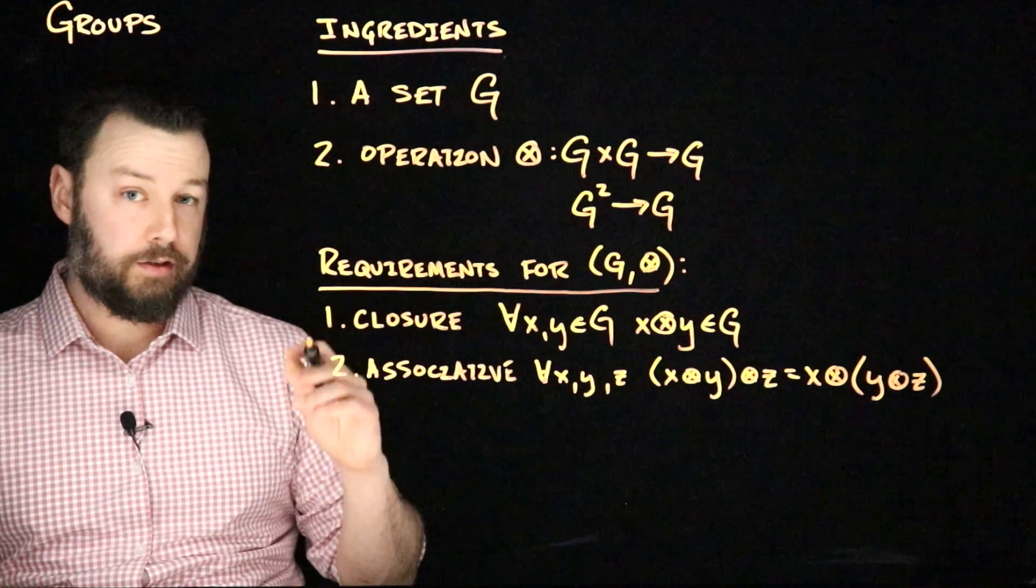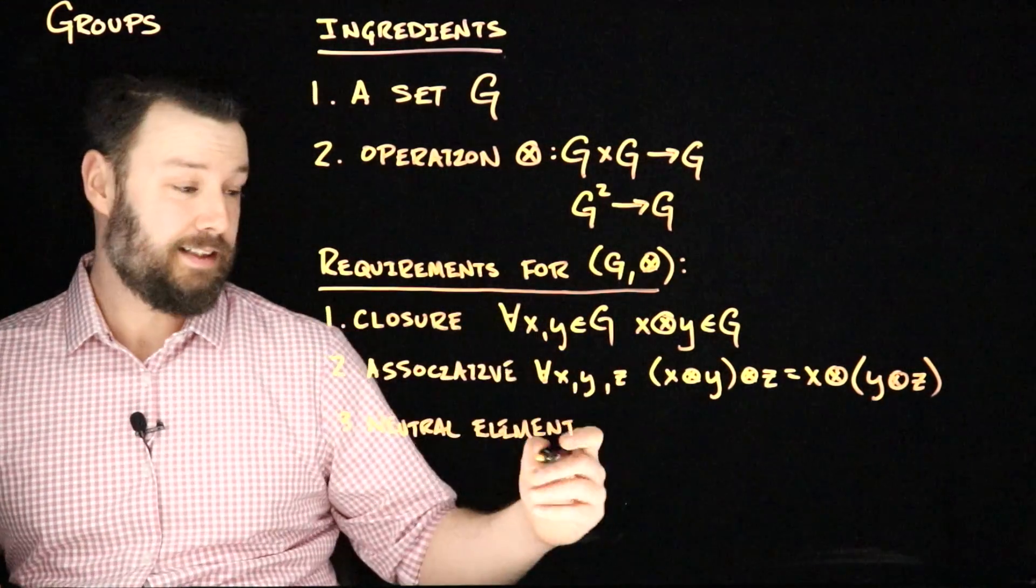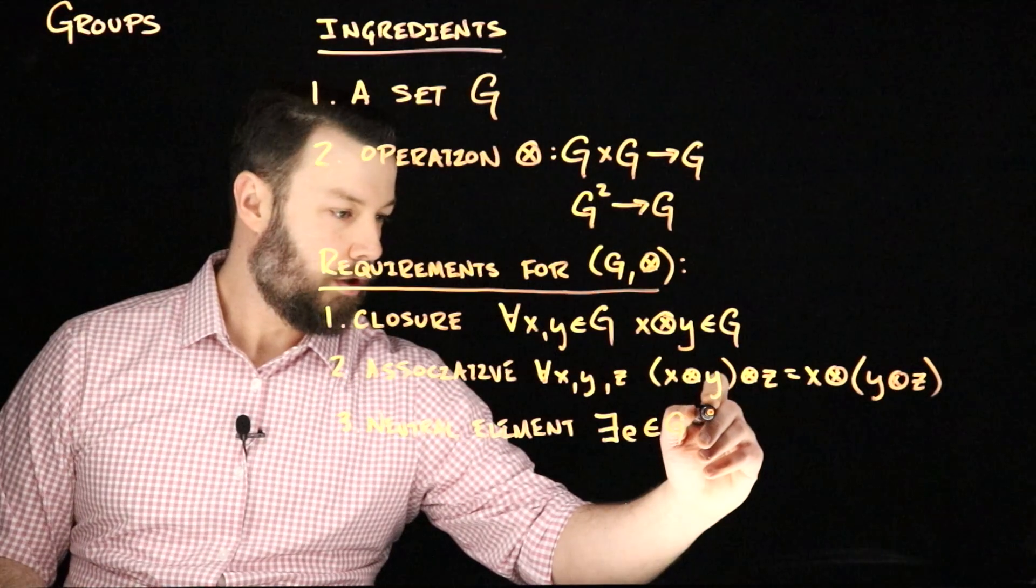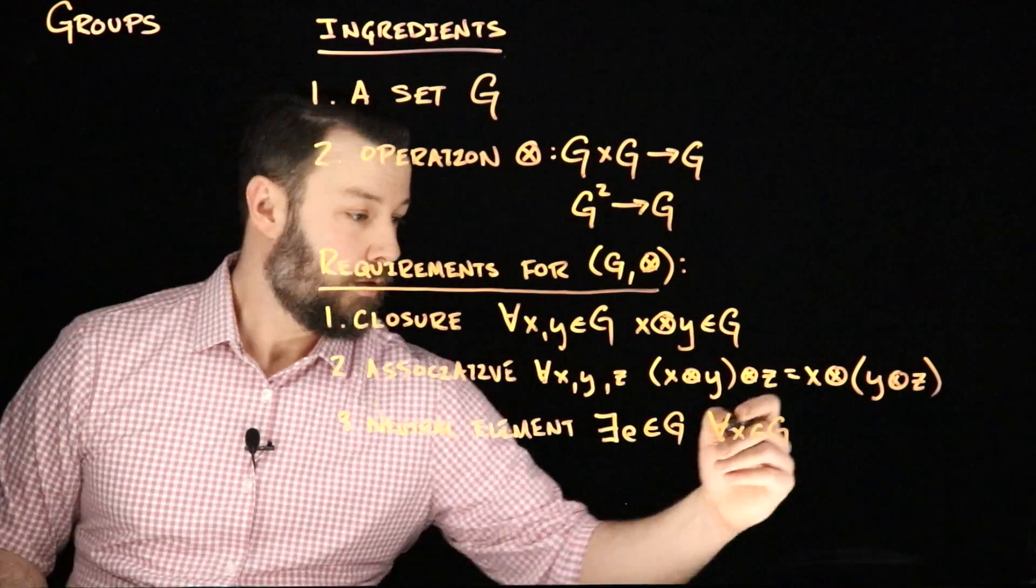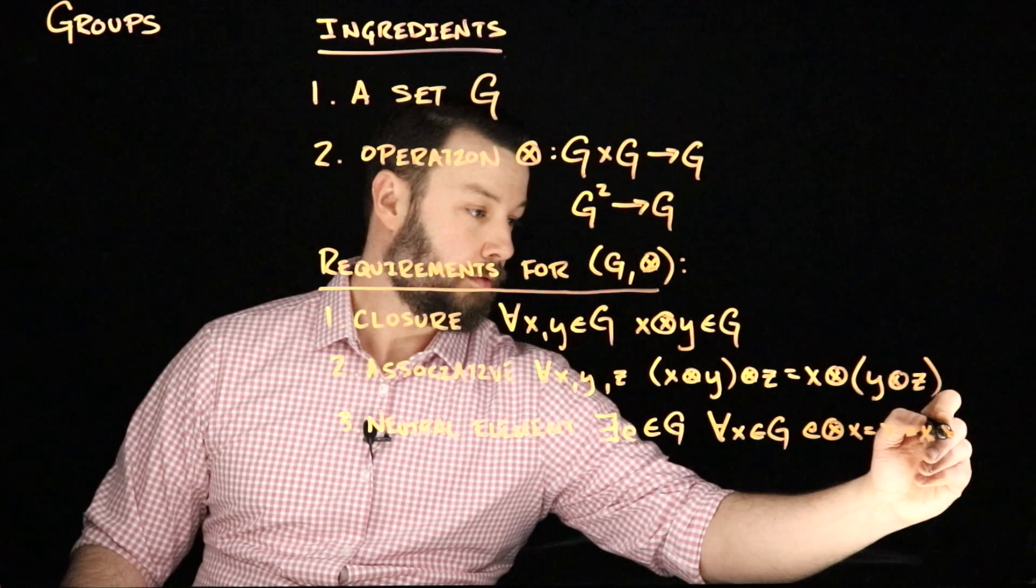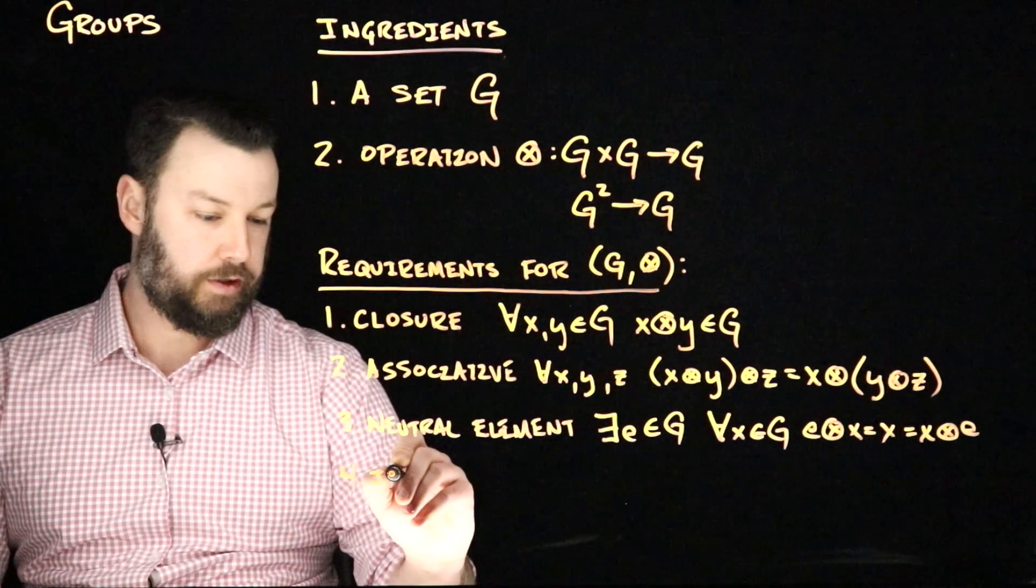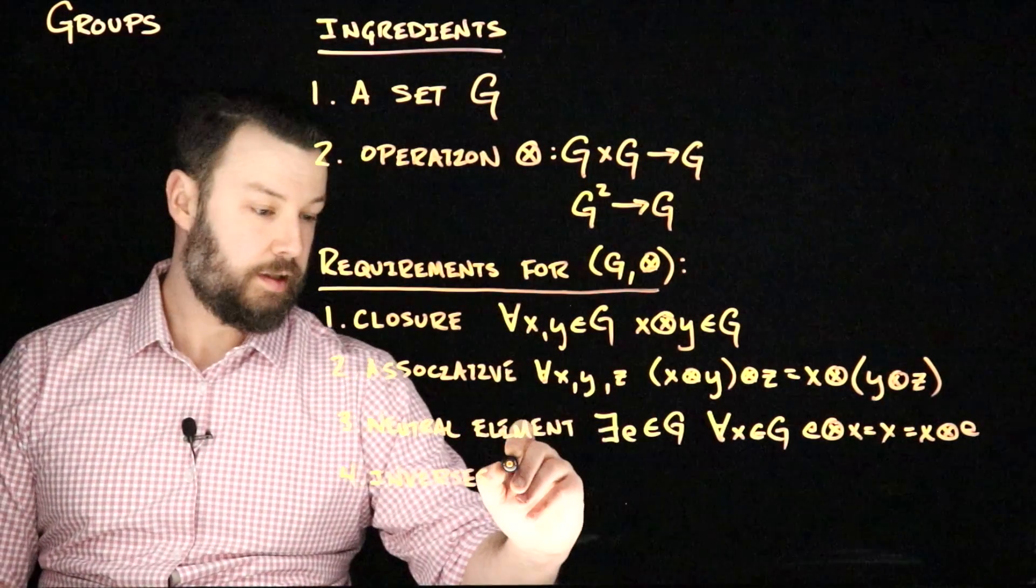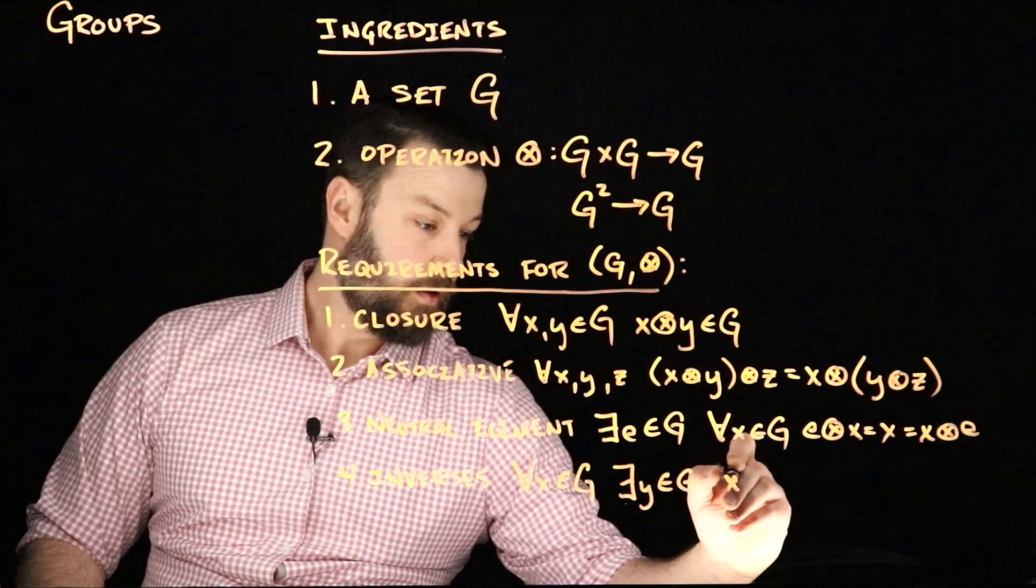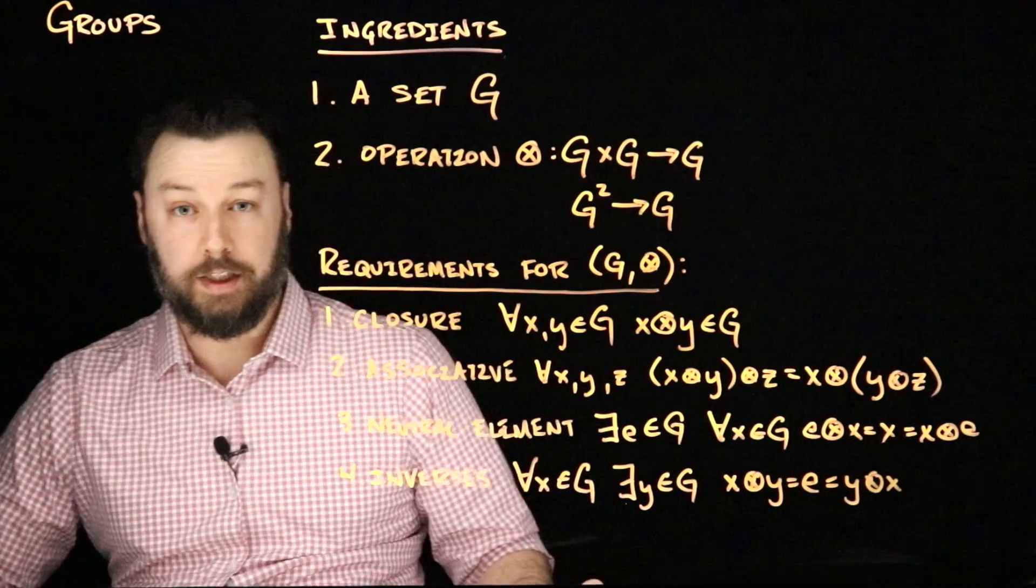It also needs to be the case that there is a neutral element. We'll call this lowercase e, so there exists an E that is a member of G such that for all X in G, E operator X equals X, and also that this works the other way around. And then the last property we need is the property that there are inverses. This is a statement that for all X in G, there exists a Y in G such that X operator Y equals E and also Y operator X equals E, the neutral element.